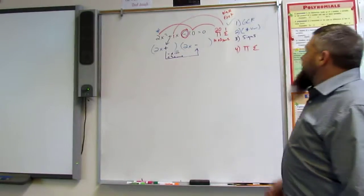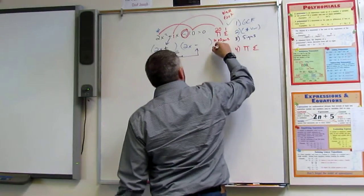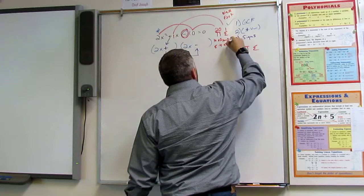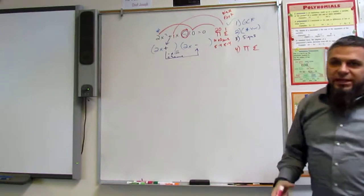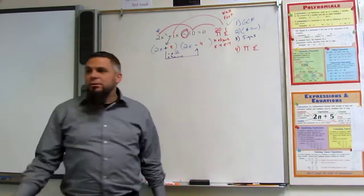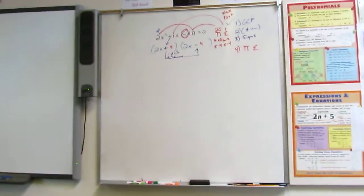So what other two numbers multiply to be 20? 5 and 4. Big number first. 5 times 4. Is 5 minus 4 1? Yes. So that's your numbers. 5 and 4. Okay? That's it. That's it.